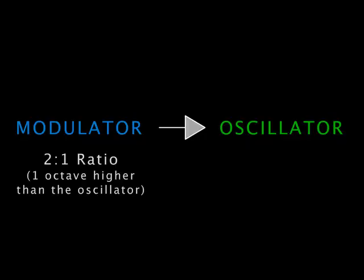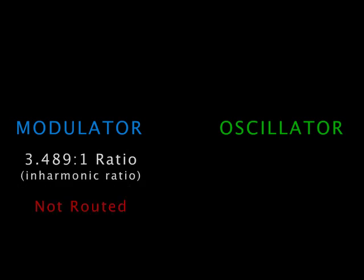That doesn't mean that any time you use an uneven ratio you get nasty sounds. Adding just a bit of inharmonic modulation can make a sound less sterile without making it dissonant. And since you have control over the modulator's volume, you can control how much it affects the waveform.